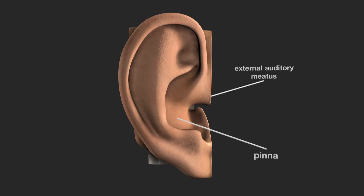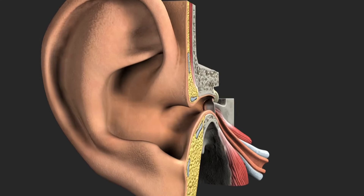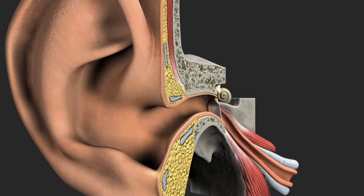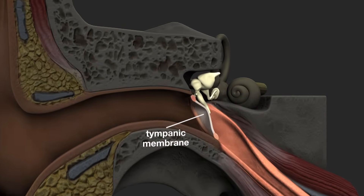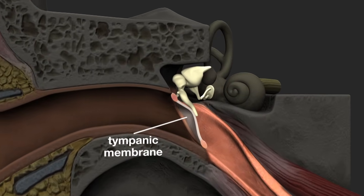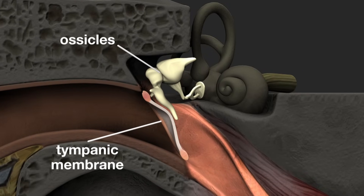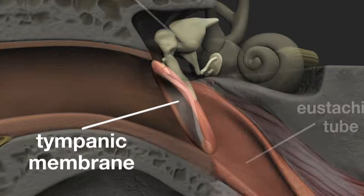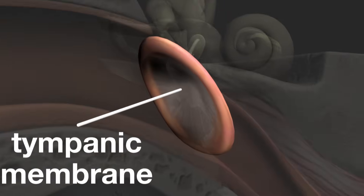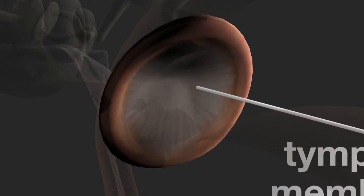The middle ear is an air-filled cavity located in the temporal area of the skull. It consists of the eardrum — the tympanic membrane — the ossicles, and the eustachian tube.